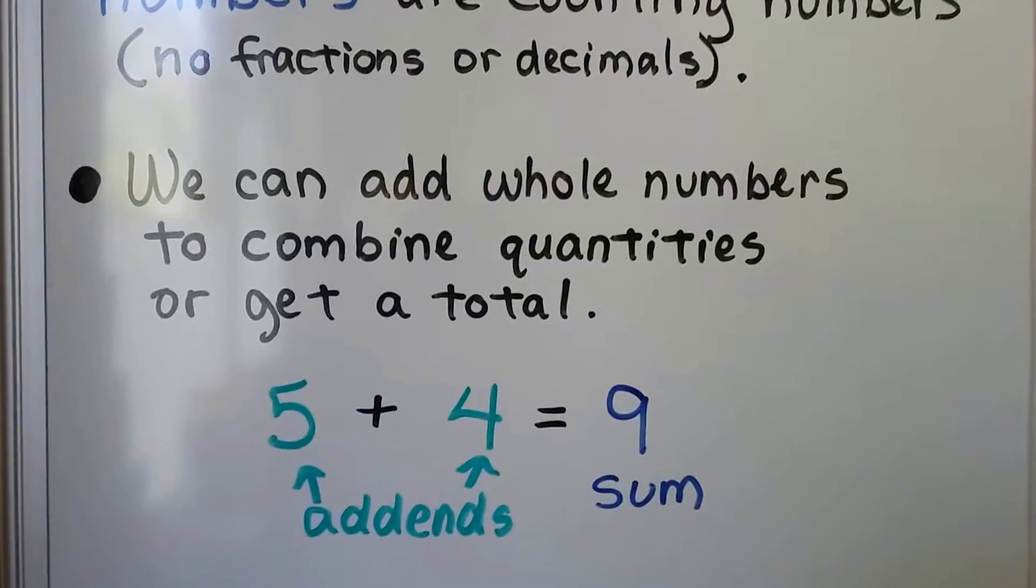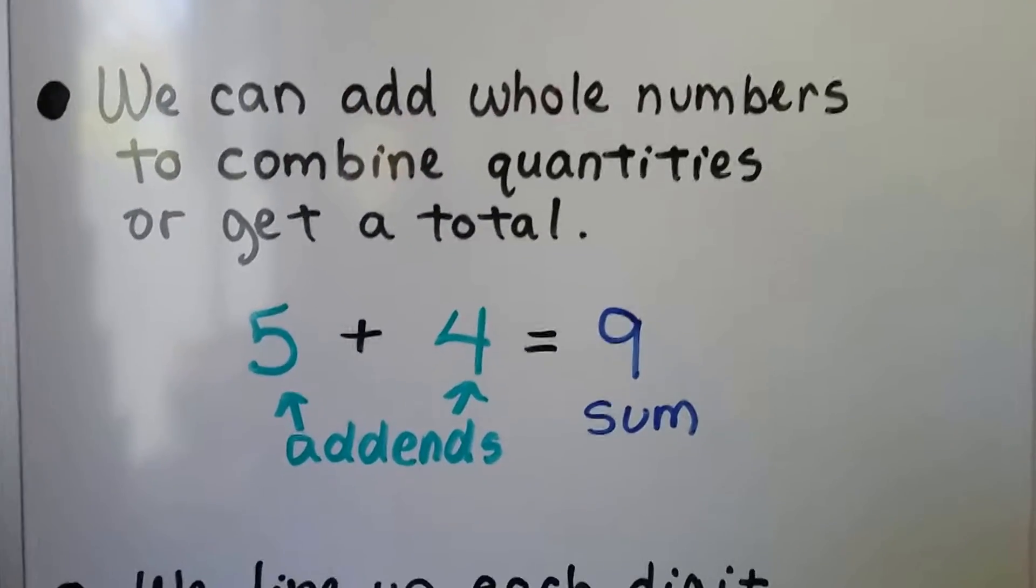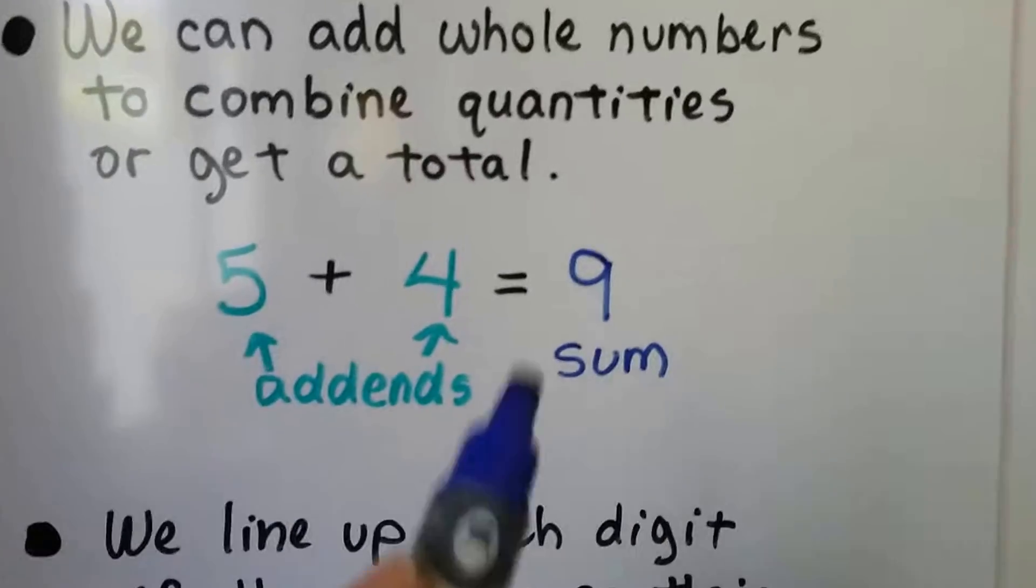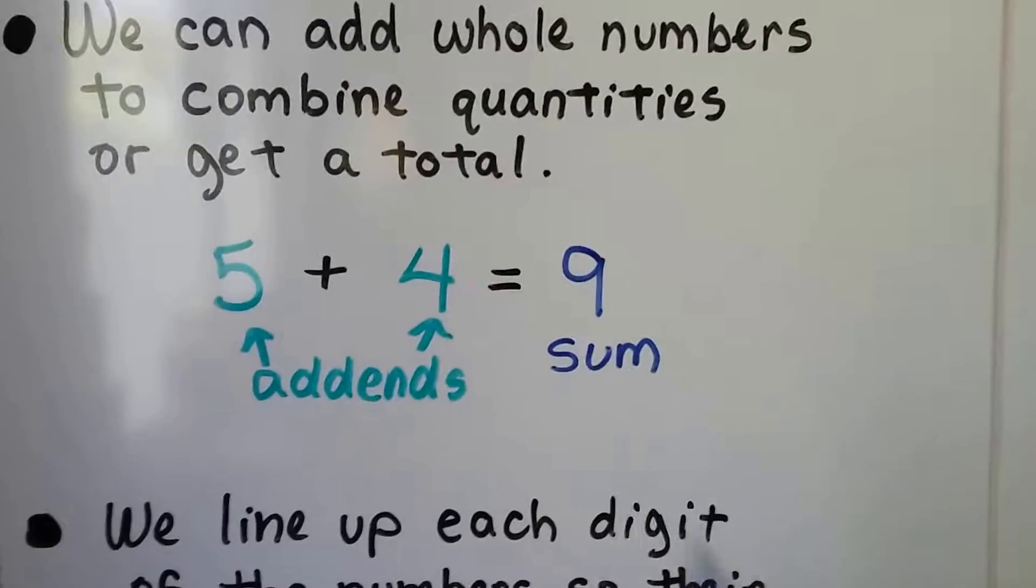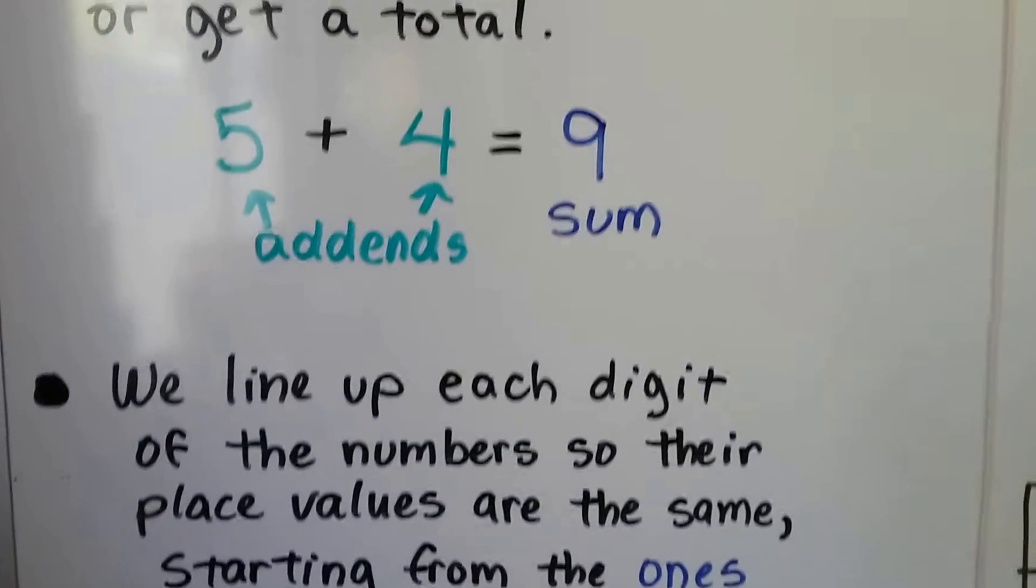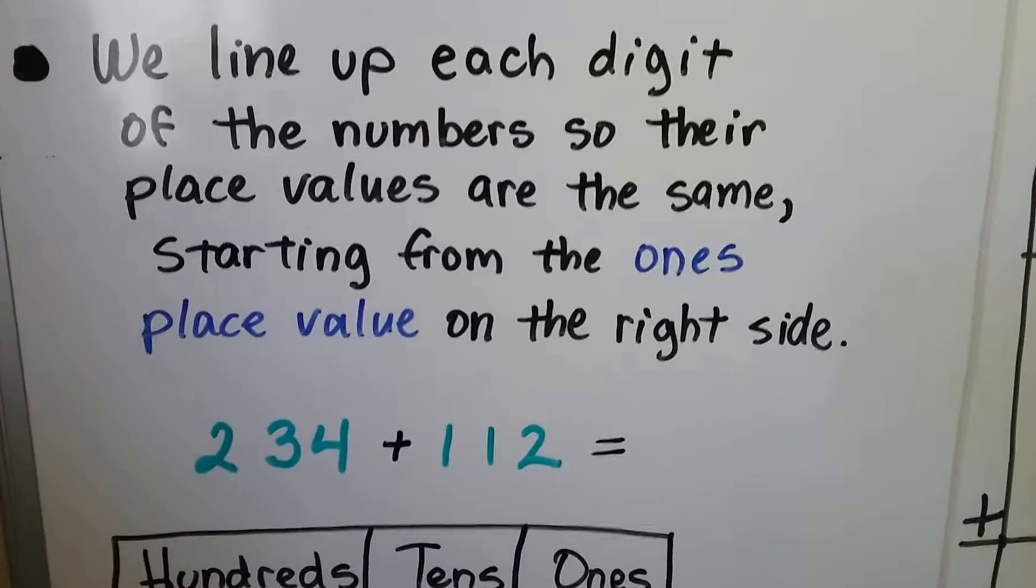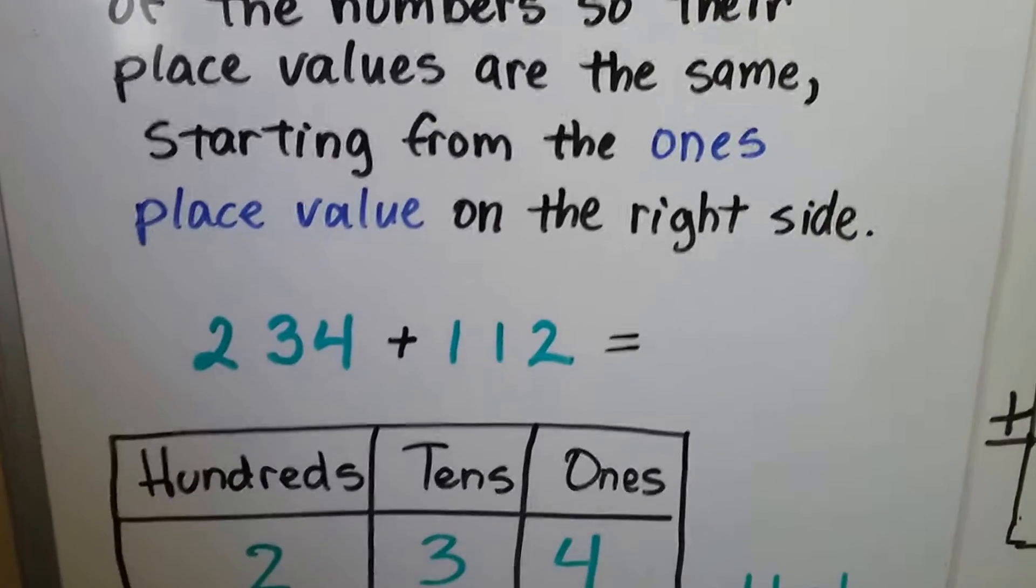We can add whole numbers to combine quantities or to get a total. So in an addition problem, the numbers we add together are the addends and the answer is the sum. We line up each digit of the numbers so their place values are the same. I'm starting from the ones place value on the right side.